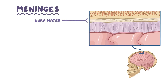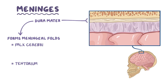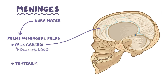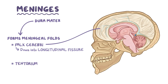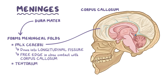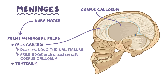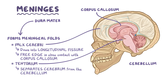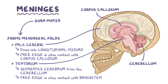The outer membrane is the dura mater, which forms the meningeal folds, such as the falx cerebri and tentorium. The falx cerebri goes down into the longitudinal fissure that separates the hemispheres of the brain. The free edge of the falx cerebri is in close contact with the corpus callosum, which connects the left and right hemisphere. There is also the tentorium, located in the back of the skull, that separates the cerebrum from the cerebellum, and its free edge is in close contact with the brain stem.